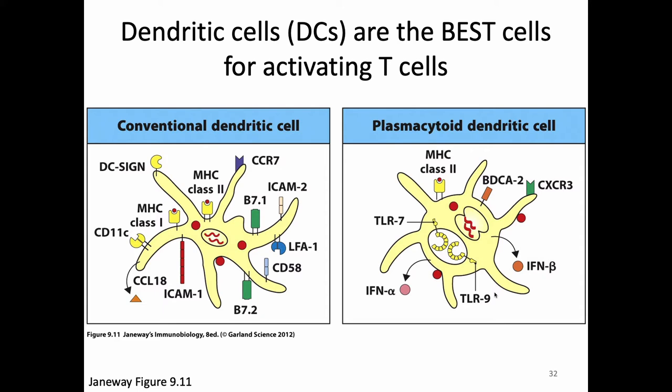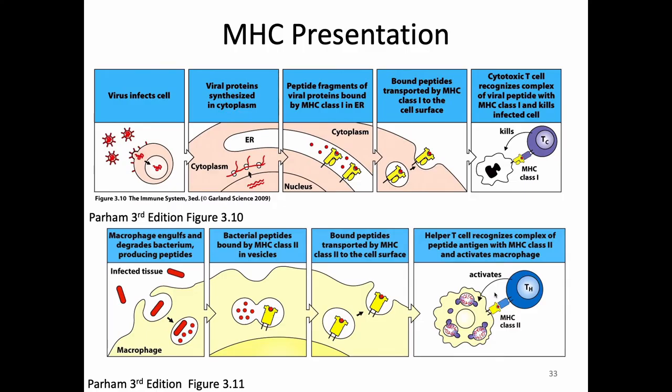In the textbook world of immunology, if we really want to turn on a naive T-cell, we think about having a dendritic cell do it. You can turn it on with something other than a dendritic cell, but ideally you want a dendritic cell because they're so good. Dendritic cells are professional antigen-presenting cells. They have the ability to present on MHC class 1, because they're nucleated cells, and also on MHC class 2. So they can do both MHC class 1 and class 2 presentation.